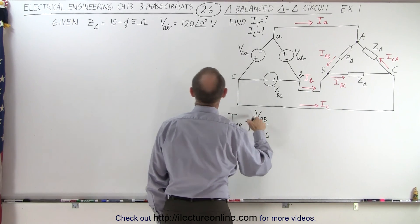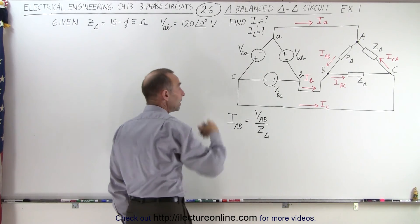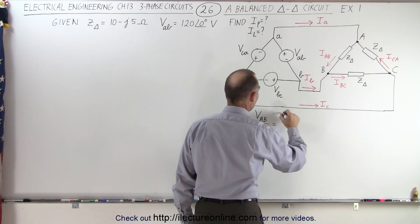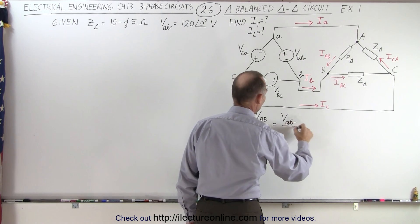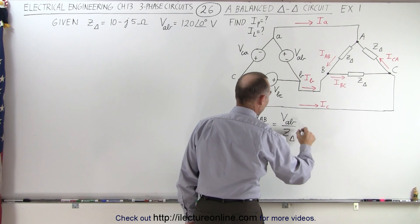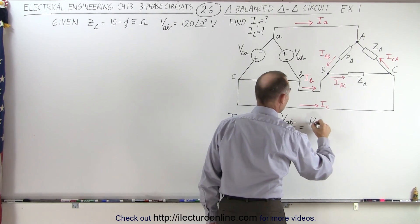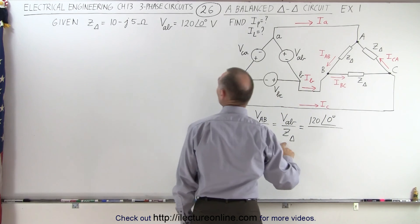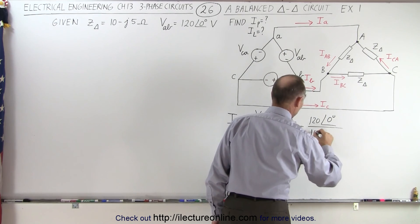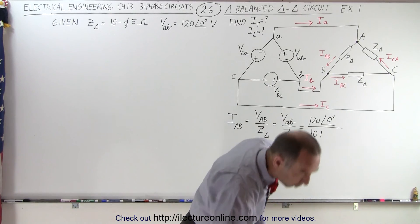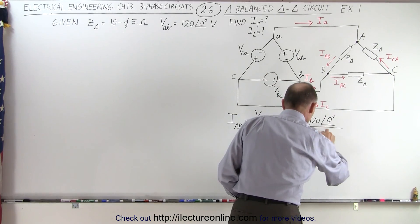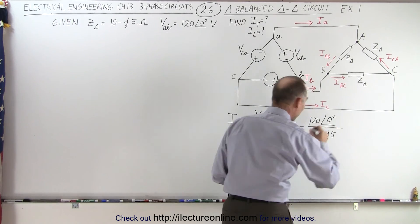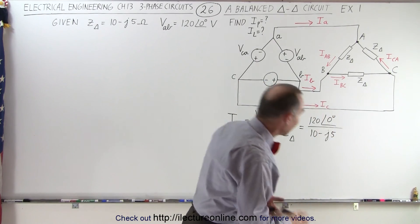We know that VAB must be exactly the same as VAB both in magnitude and in phase, because it's a delta-delta circuit. So this can be written as VAB divided by the impedance. VAB is equal to 120 with a phase angle of 0 degrees, divided by the impedance 10 minus j5, and of course we have to convert that into magnitude and phase angle.